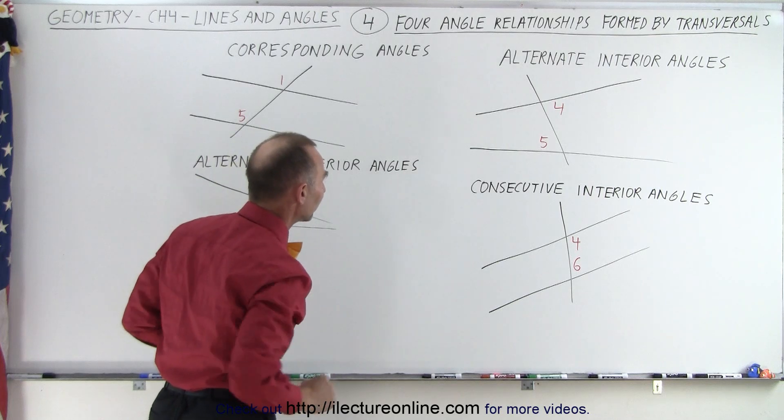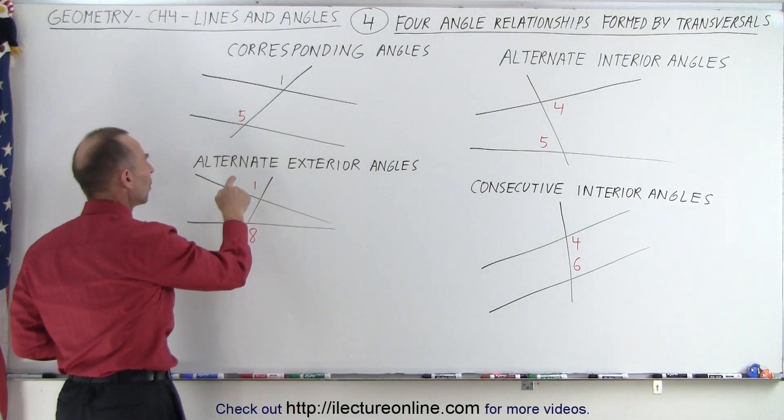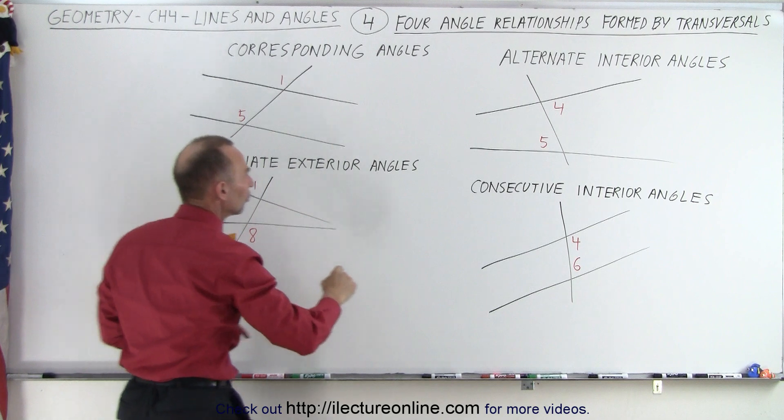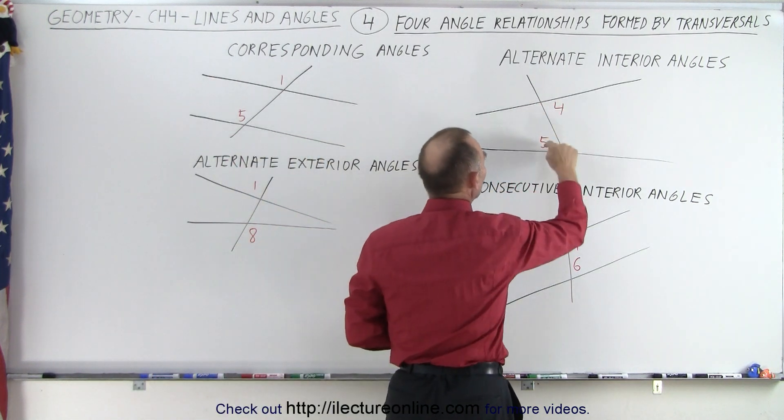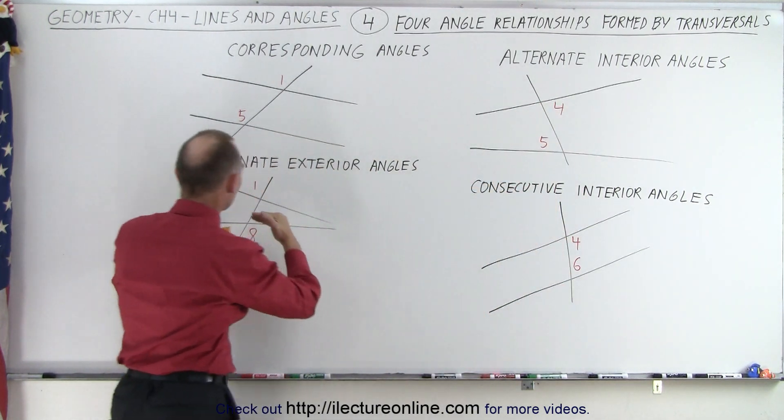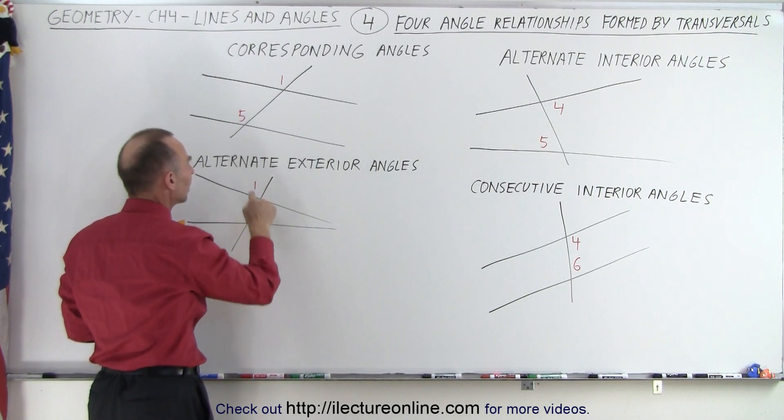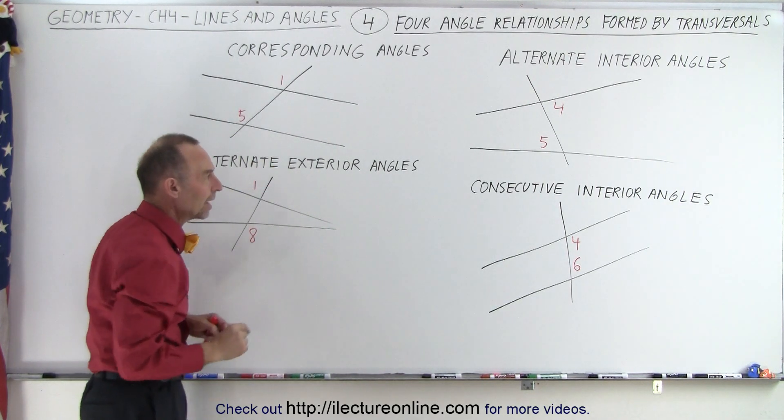Here we have what we call alternate exterior angles. So the interior angles are in between the lines. The exterior angles are outside the two lines. So one and eight would be considered alternate exterior angles.